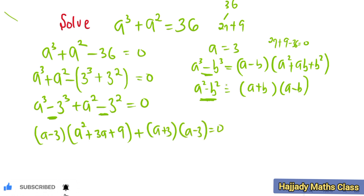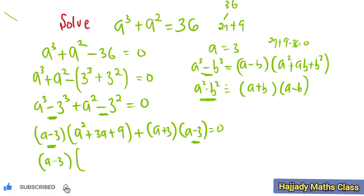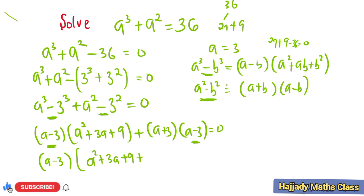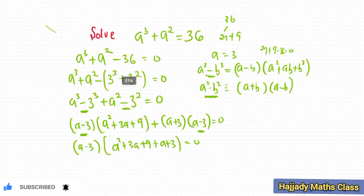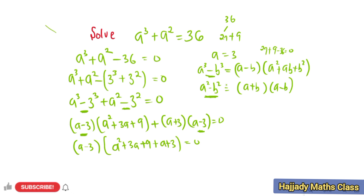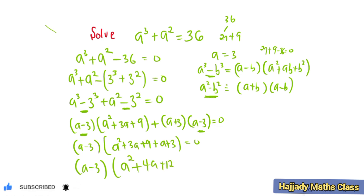So with this, we can see that (a minus 3) is common to both sides, which can be factorized out. So here, I'm going to have (a minus 3) being factorized, and we are left with a squared plus 3a plus 9, plus (a plus 3), which is equal to 0. From here, we can solve what is inside the brackets, so I'm going to have (a minus 3) and inside I'm going to have a squared plus 4a plus 12, equals 0.